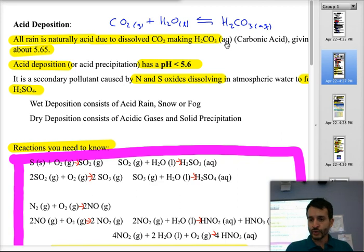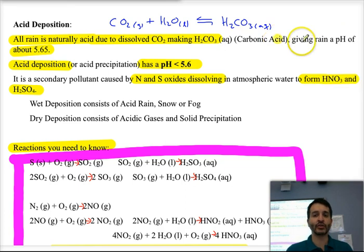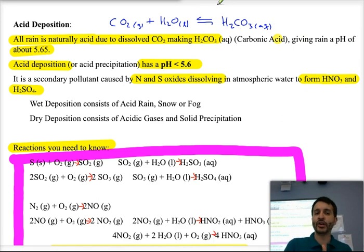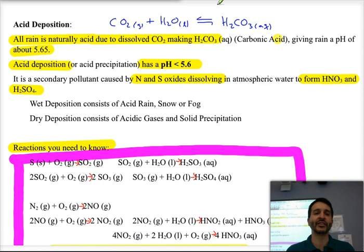Naturally, rain is acidic because when water reacts with carbon dioxide it forms carbonic acid, giving rain a natural pH of approximately 5.65. Anywhere down to 5.65 is considered natural. Acid deposition or acid precipitation by definition is any precipitation that will have a pH lower than 5.6.